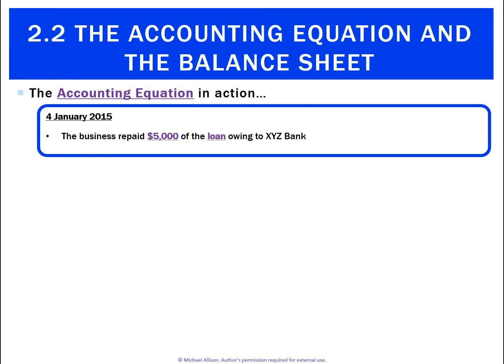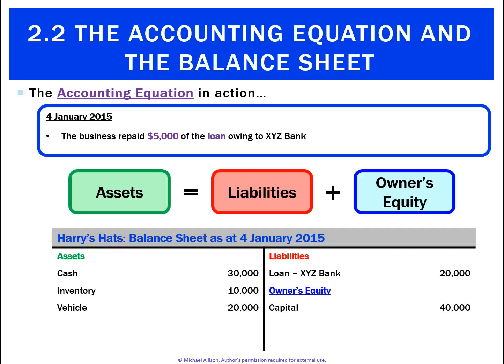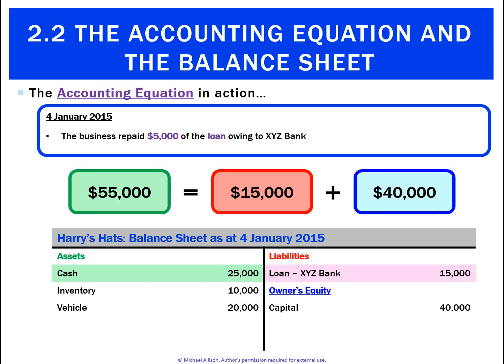The last transaction: the business repays $5,000 of the loan owing to XYZ Bank. Cash goes from $30,000 to $25,000, and instead of owing XYZ Bank $20,000, we now only owe them $15,000. So our two sides are assets of $55,000, liabilities of $15,000, owner's equity of $40,000 — and the two sides balance.